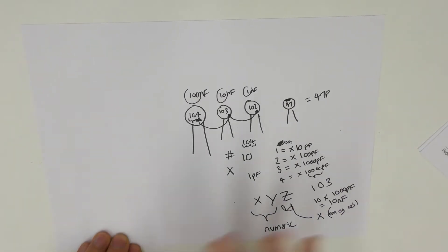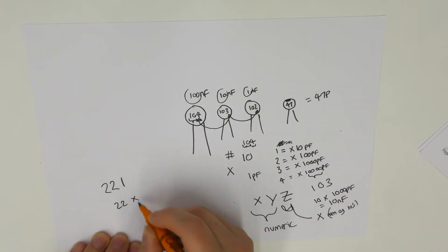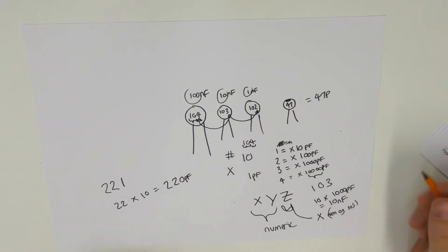So let's take a few quick examples so we can see how this works. If we had 2, 2, 1, what we have is 22 multiplied by 10. So it would be a 220 picofarad capacitor.